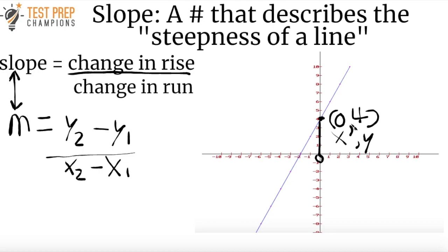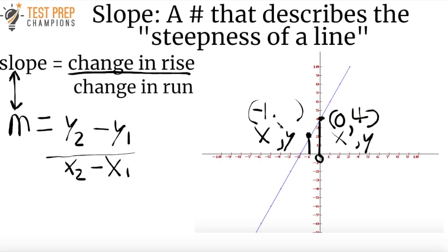We also have to find another point on the graph. Let's pick another point on this line and find the coordinates for it. For this dot right here — again, we always write the x-coordinate first and the y-coordinate second. If we trace a line down from the dot until we reach the x-axis, we see that we're at negative 1. So the x-coordinate for this point is negative 1. If we trace a line over to our y-axis, we reach it at 2. So the y-coordinate here is 2. We now have two pairs of coordinate points.